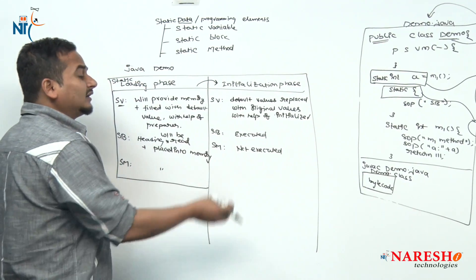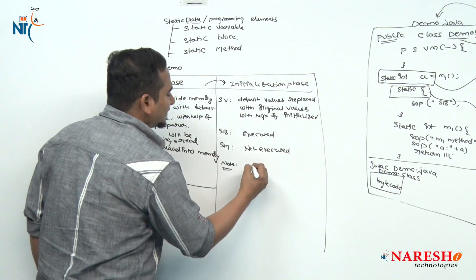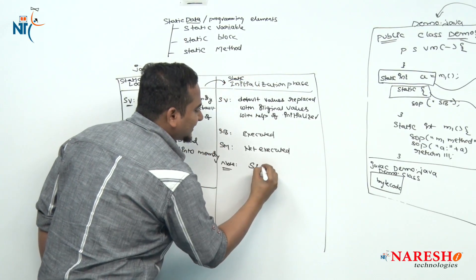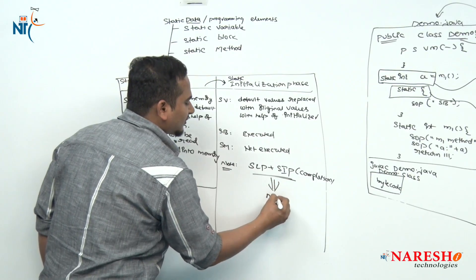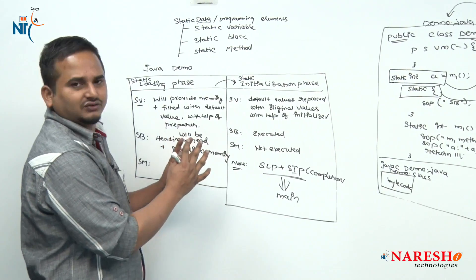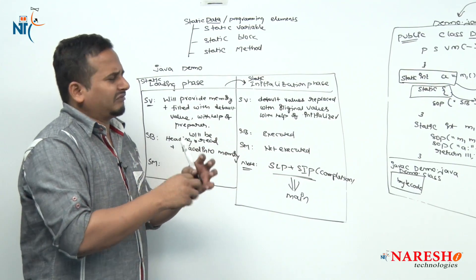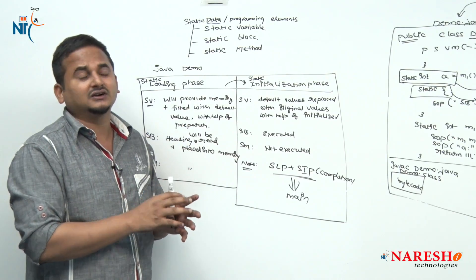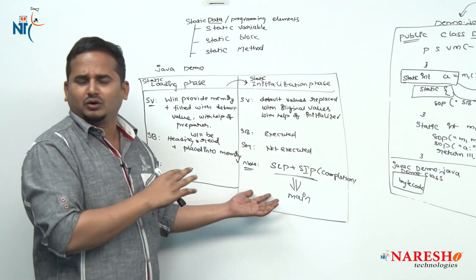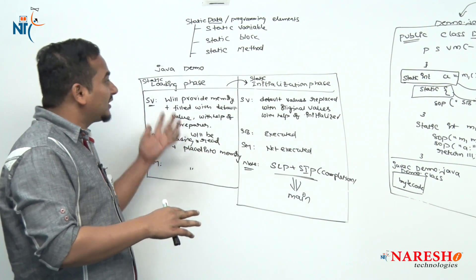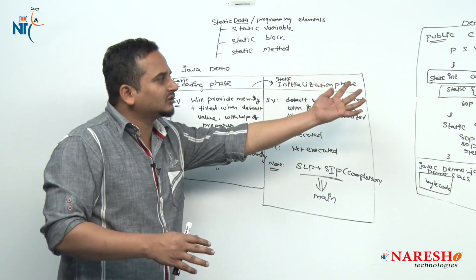So remember: if you want to execute any method, definitely we need to call it. After successful completion of the static loading phase and static initialization phase, JVM control goes to the main method. This is the actual process JVM does before executing the main method. Most people think JVM directly executes the main method, but before executing the main method, all this process happens. Main method is not at the starting of the program — before main method, this much processing is done by JVM.